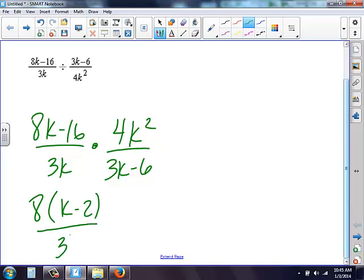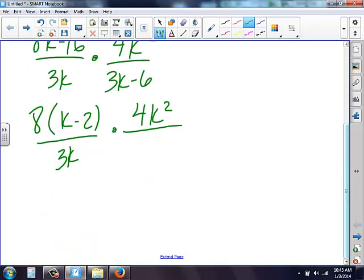On the bottom of 3k, I can't do anything else, so it's left with 3k. On the top here, 4k squared stays there. I can't simplify. But on this bottom, I have 3k minus 6, which I can pull out a 3. So I pull out that 3. I'm left with k minus 2.